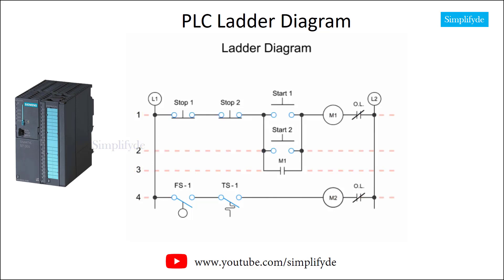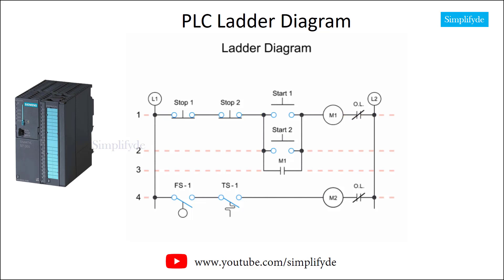When referencing wire segments associated with each rung, you start at the top left and number every wire between contacts. The wire against rail L1 before the stop one contact is wire one, the wire between stop one and the stop two contact is wire two, and so on across the circuit, with each subsequent wire between contacts numbered sequentially. Any contacts in parallel will share the same wire number, so there is no need to number them separately.